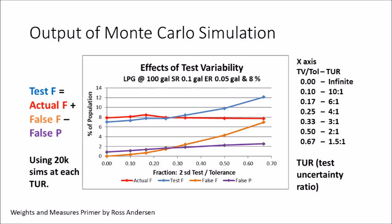Essentially, we're comparing the test variability to the tolerance. I'm plotting four lines from the simulation results. The red line represents the actual failures. The purple line represents false positives and the orange line represents false negatives. Then I plot the blue line, which represents the test failures. Test failures are always equal to the actual noncompliance, plus the false negatives, minus the false positives.